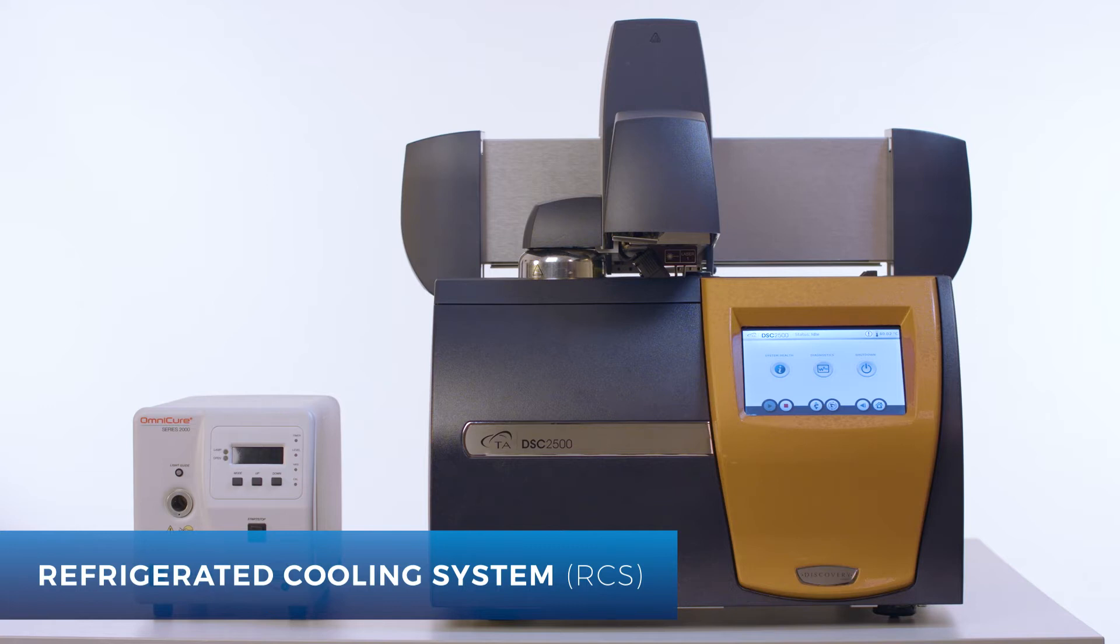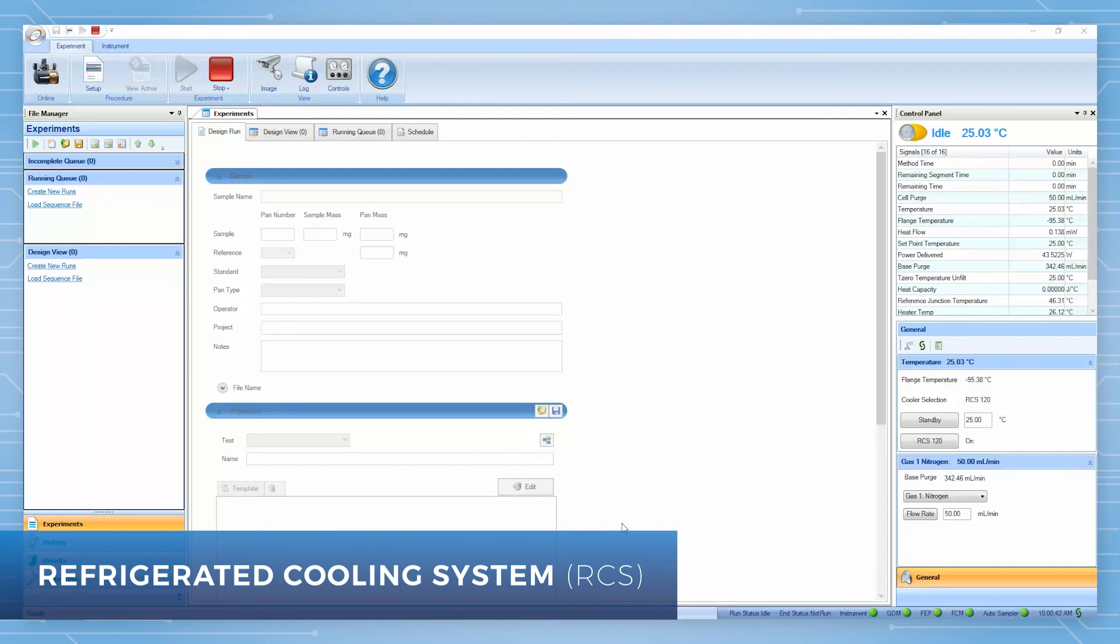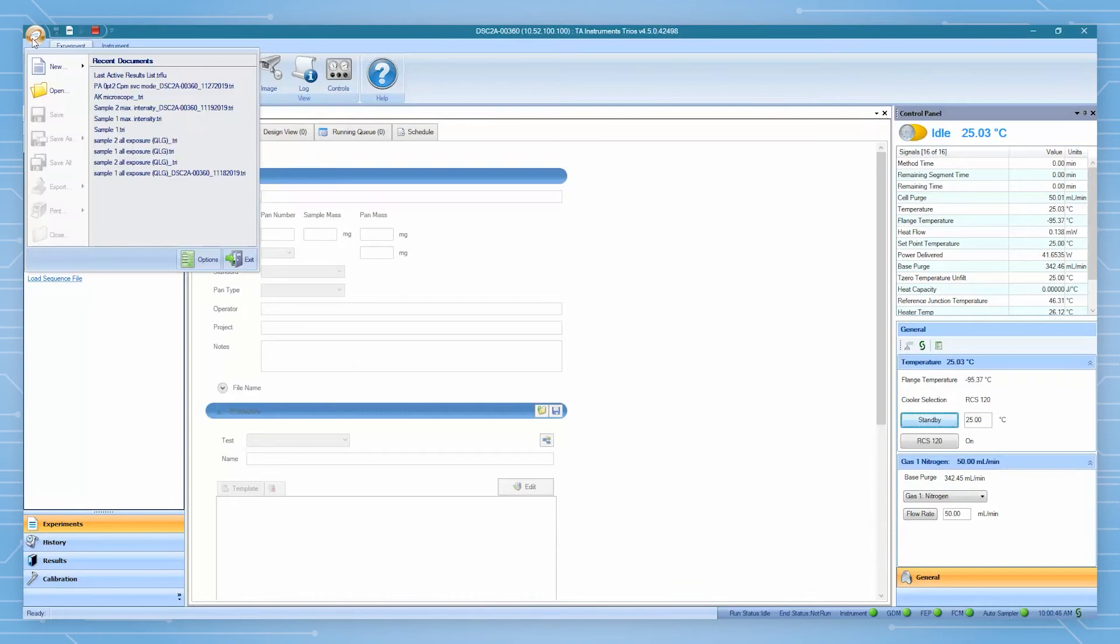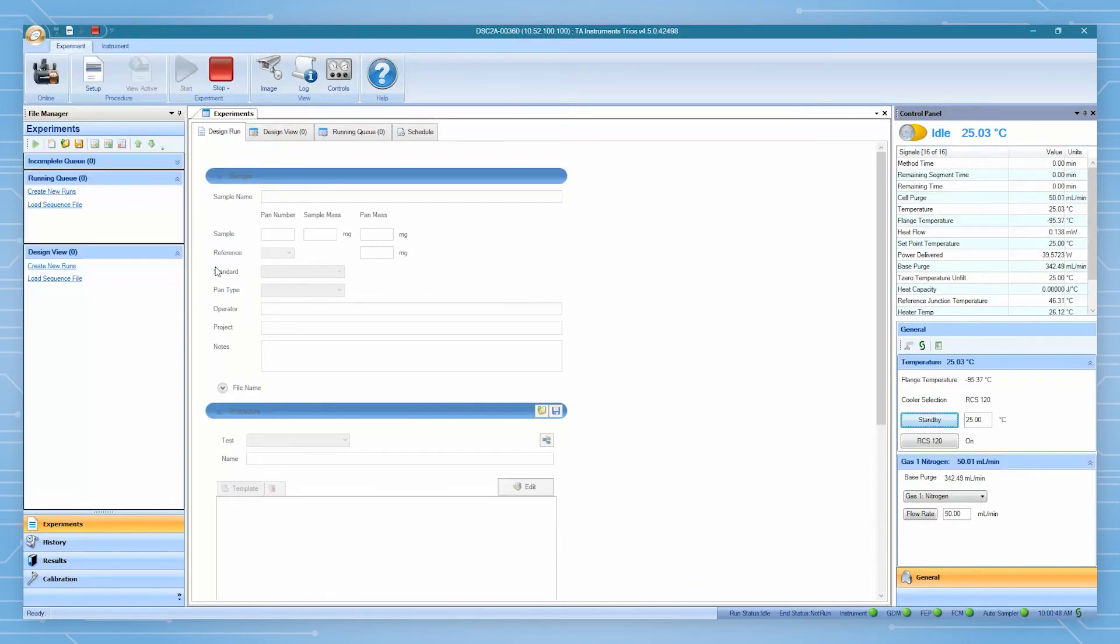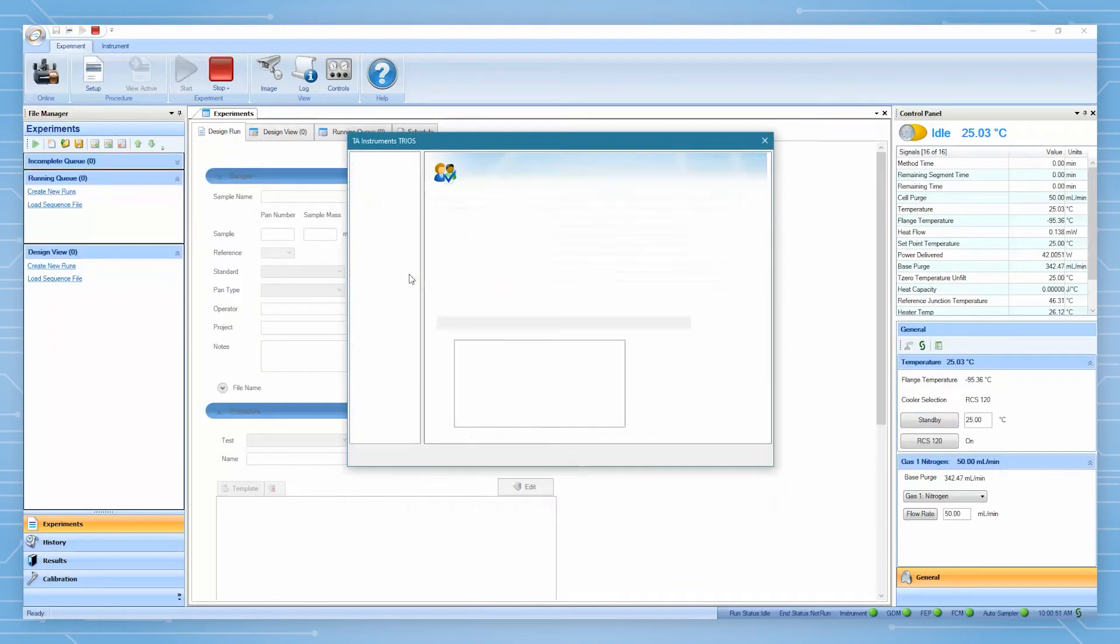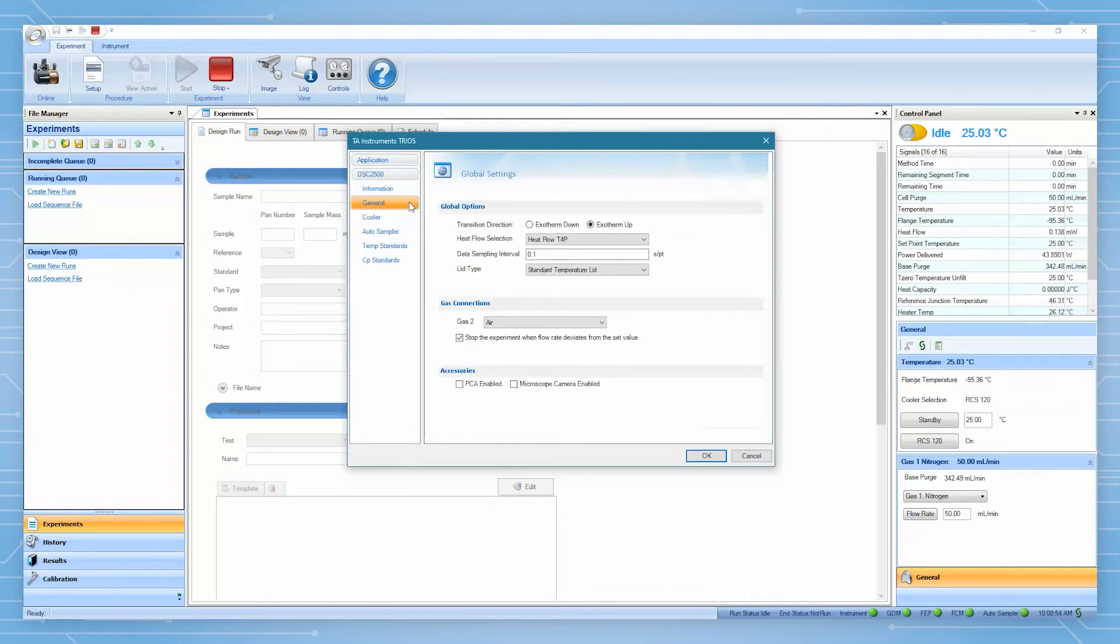The PCA is designed to be used with Discovery DSC and is required to be run in T4 or T4P heat flow mode. From the TRIO software, go to TRIO options, General, and make sure T4 or T4P heat flow mode is selected. Make sure PCA enabled is checked.